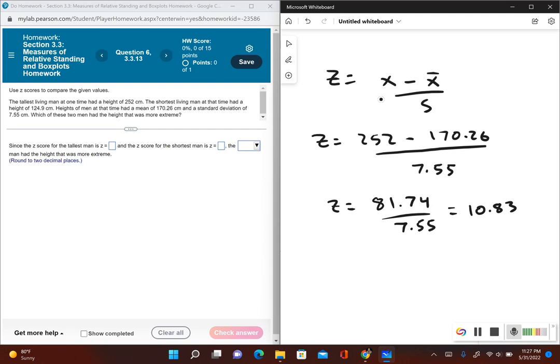So now we'll do something similar for the shortest man. Let's change his height into a z-score, so we have 124.9. Again, this is how tall the shortest man was, so 124.9 minus 170.26, and we divide it by the standard deviation, which is 7.55.